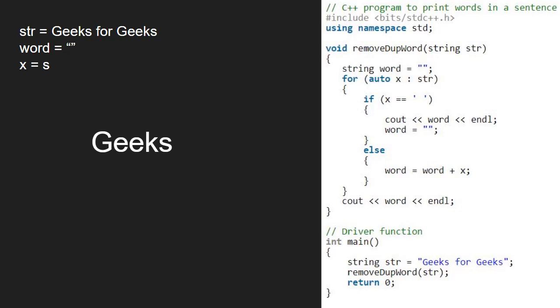We continue in the for loop and keep adding character x to word till the next space is encountered. for will get stored in string word.